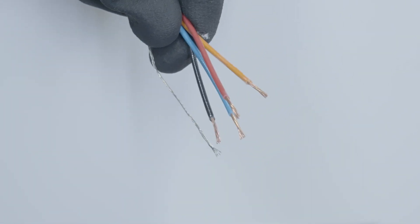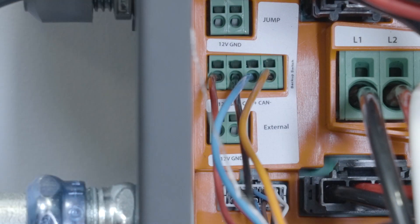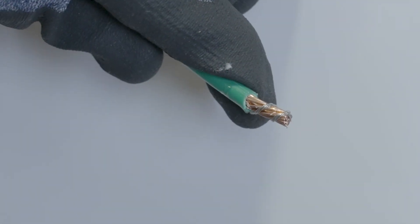Terminate the four conductors of a shielded, twisted communication cable in the solar assembly, taking note of the labels of each conductor. Twist the drain wire around the bare copper of an equipment grounding conductor and terminate in the ground terminals of the solar assembly.